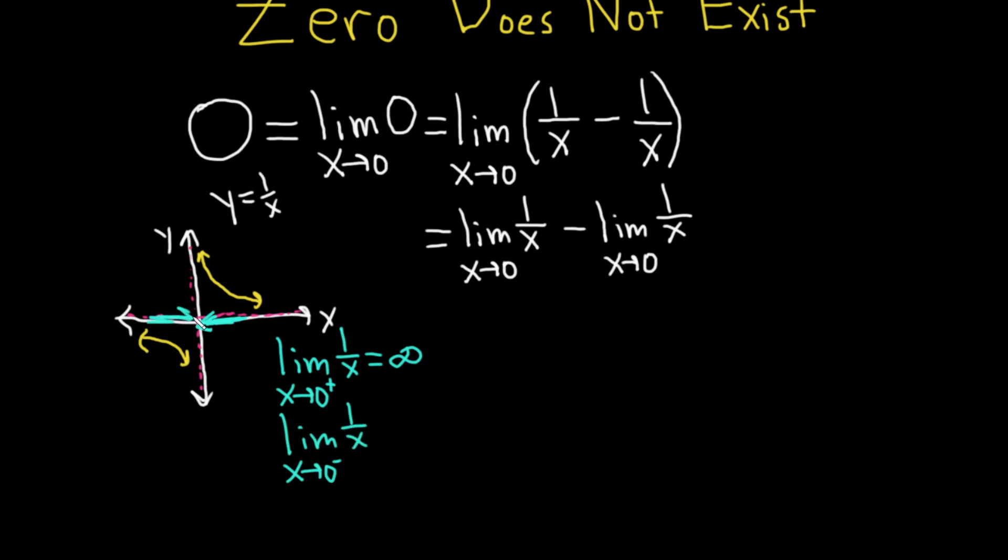So again, approaching zero from the left, what happens to the y-values of the graph? Well, as x gets closer and closer to zero from the left, the y-values get infinitely small. So we say that they are approaching negative infinity.